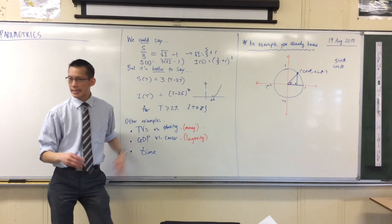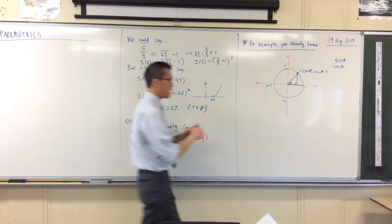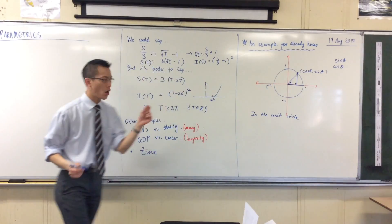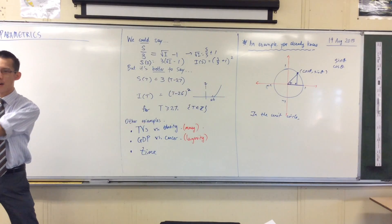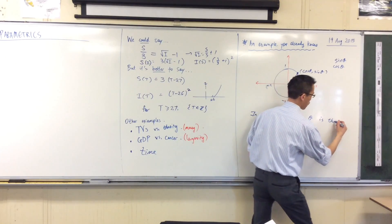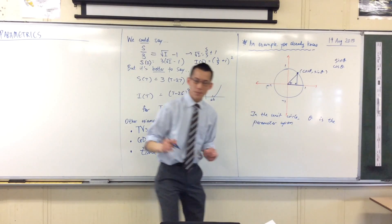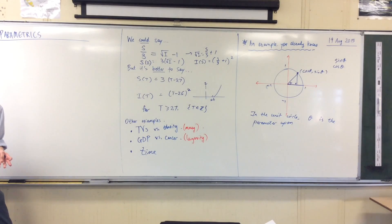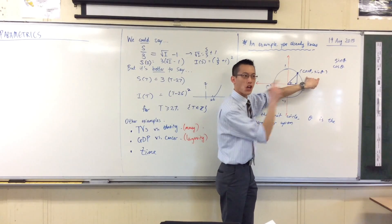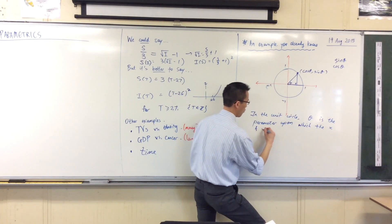Now that we have the language powerful enough to describe it, let's get this formally down. In the unit circle, what you've got is a new third measurement — theta. Theta is the parameter upon which your x and y coordinates get their values. Their x and y coordinates depend on it.